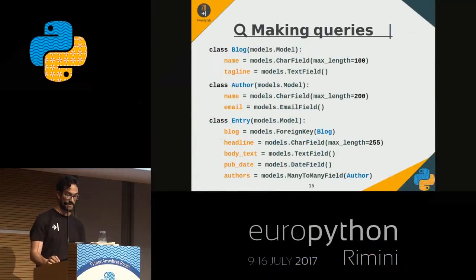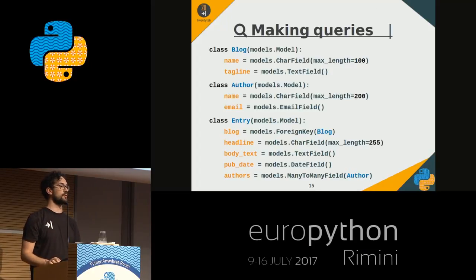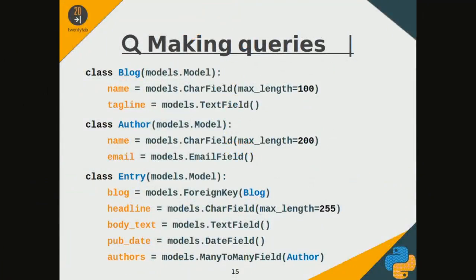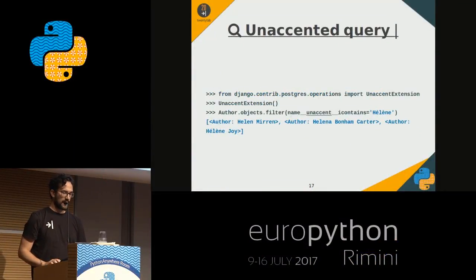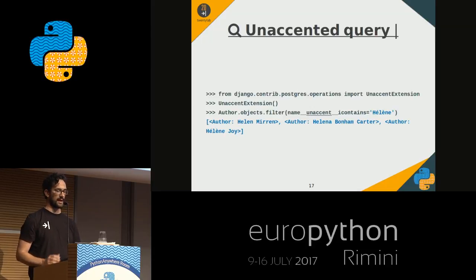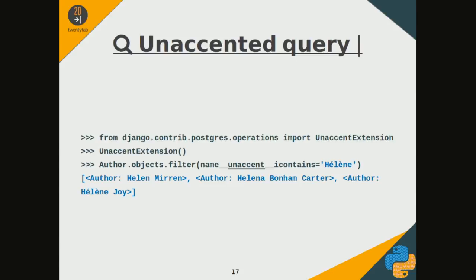Let's look at the functions of full-text search in Django, starting from the models present in the official search documentation. We have Blog and Author classes connected through an Entry class. These are the basic searches we can use on a model in Django: using filter with 'contains' in the first case, and using case-insensitive 'icontains' in the second case to get more results. We can activate the unaccent Postgres module to search without worrying about accented characters — most useful in various languages, also in Italian. However, this involves a full table scan and its potential is low.